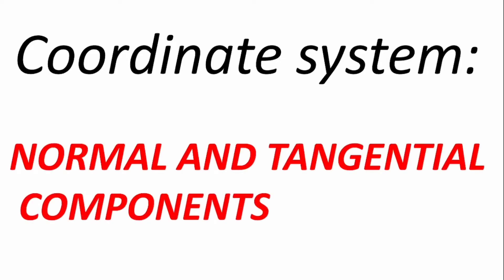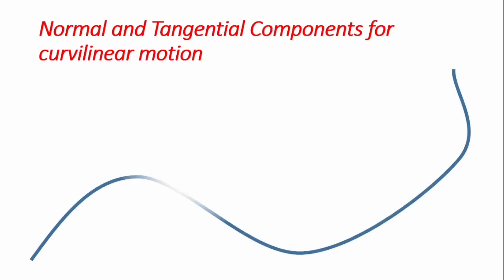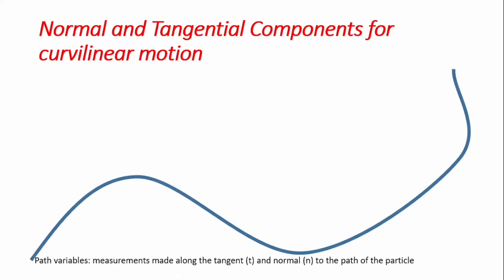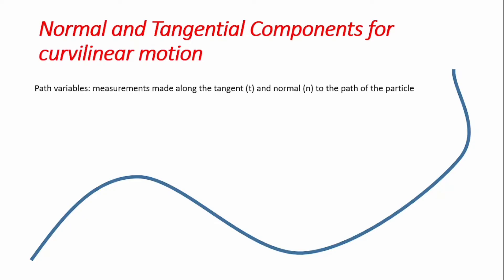We're going to look at another form of coordinate system: the normal and tangential components of a particle undergoing motion in a curved path. By normal and tangential components we mean path variables — measurements made along the tangent and normal to the path of the particle. If we have a particle at point A of the curve path, we can have two coordinates: one is the tangential and the other is the normal. By normal we mean perpendicular to the path, and by tangent we mean tangential to the path of motion.